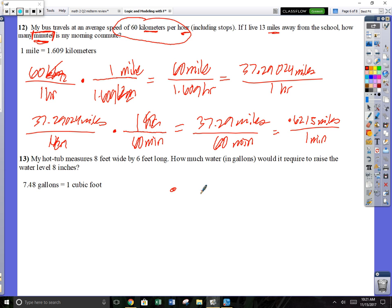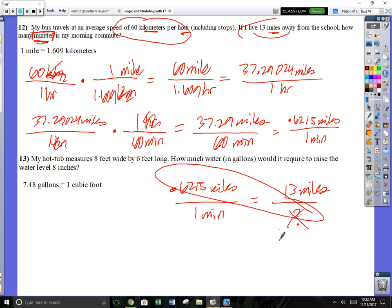If he's going over half a mile a minute and I live 13 miles from the school, I'm going to set up a proportion. I'm going to compare miles to minutes: 0.62150 miles per one minute, and I want to know 13 miles. I need to know how many minutes it's going to take, so that's going to be my x.